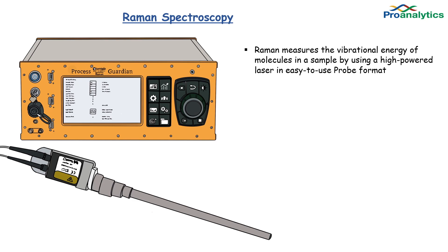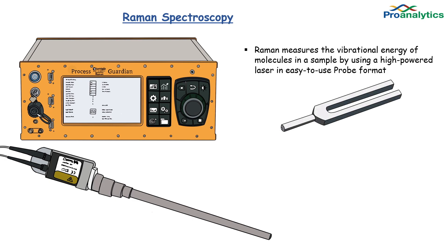Unlike NIR and IR technologies, which measure the absorption of energy or photons by a sample, Raman spectroscopy measures the amount of vibrational energy after a sample has been struck by a photon. You can think of Raman as a tuning fork for molecules. After the molecule has been struck by a photon, it will vibrate, giving its own unique signature profile like a fingerprint.